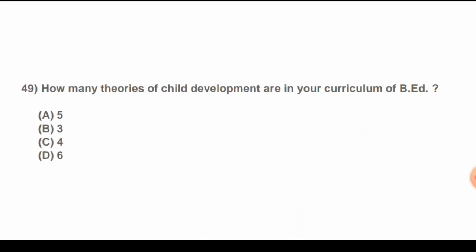Question 49: How many theories of child development are in your B.Ed curriculum? The options are: three, four, five, and six. The correct answer is C) four.